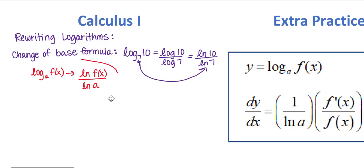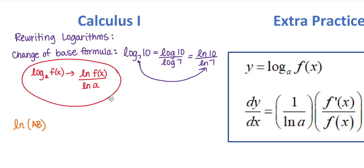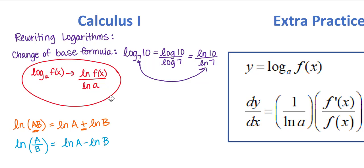This change of base formula is why the derivative is what it is. Let's also cover a couple of other log properties. Natural log of a product AB separates into natural log of A plus natural log of B, because logarithms are essentially exponents — when multiplying with the same base you add exponents. Similarly, natural log of A over B becomes a difference. And if we have natural log of A to some exponent M, that exponent comes down in front as a multiplier.